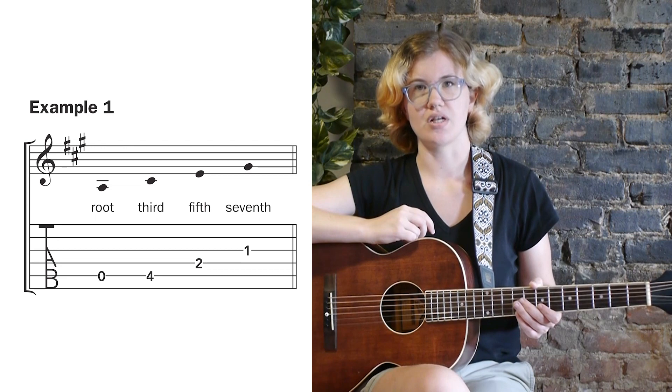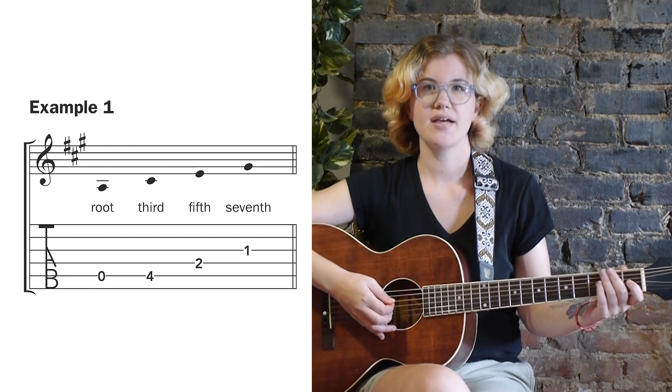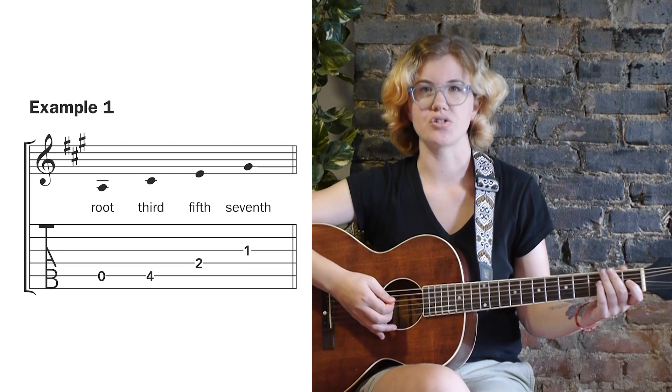Example 1 shows us the notes in an A major 7 chord. The notes are A, C sharp, E, and G sharp.